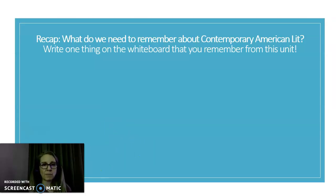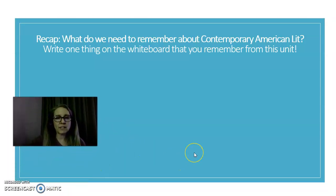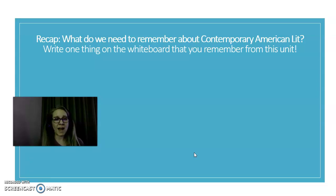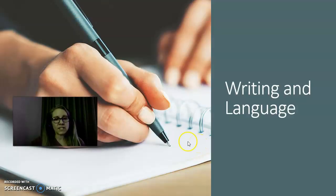Consider what we need to remember about contemporary American lit. Go back and look at your reading journals, look at recordings from past live sessions, and consider those elements of contemporary American literature and how they are expressed through the writing we read in this unit.